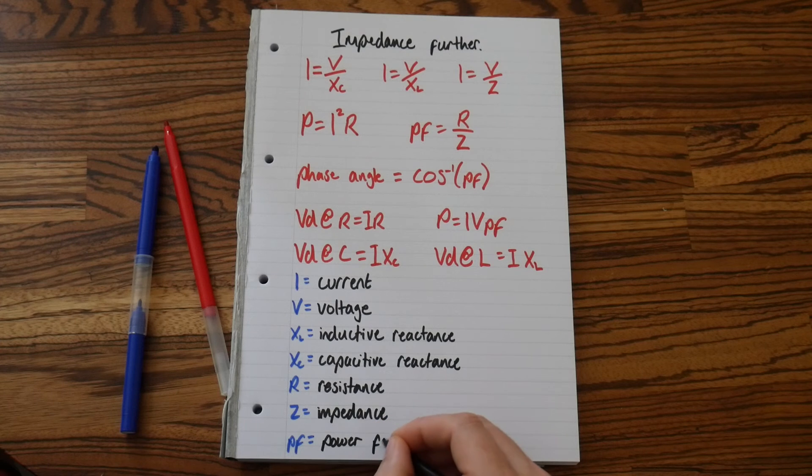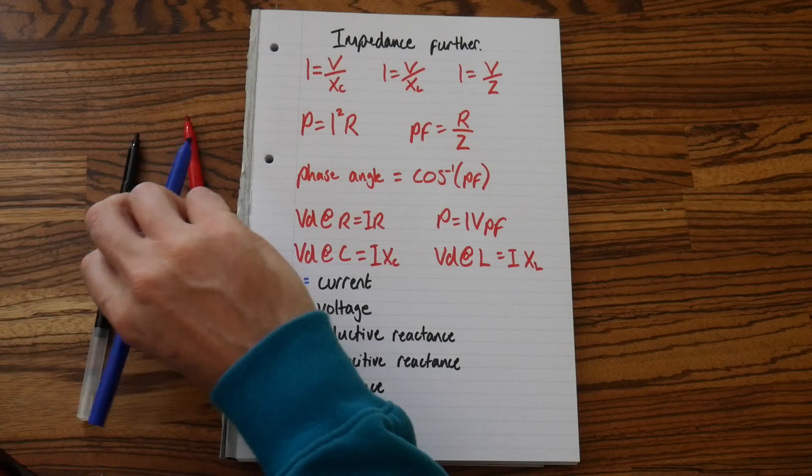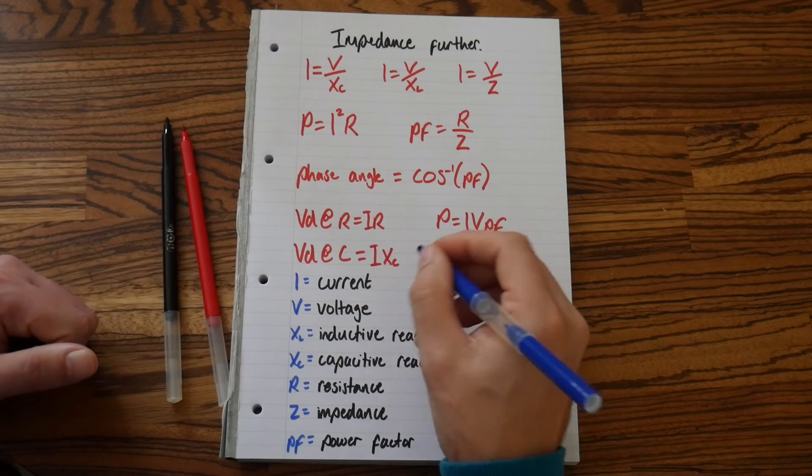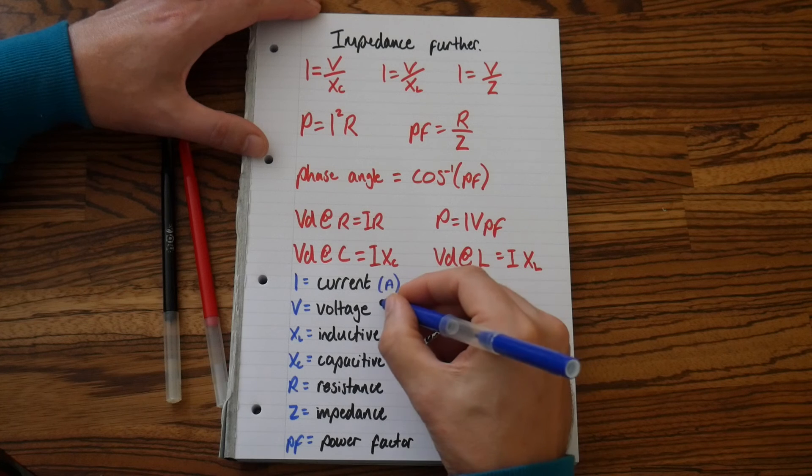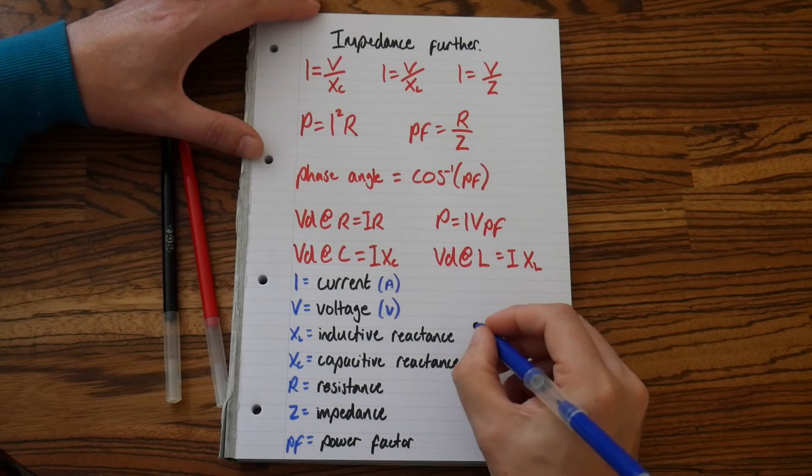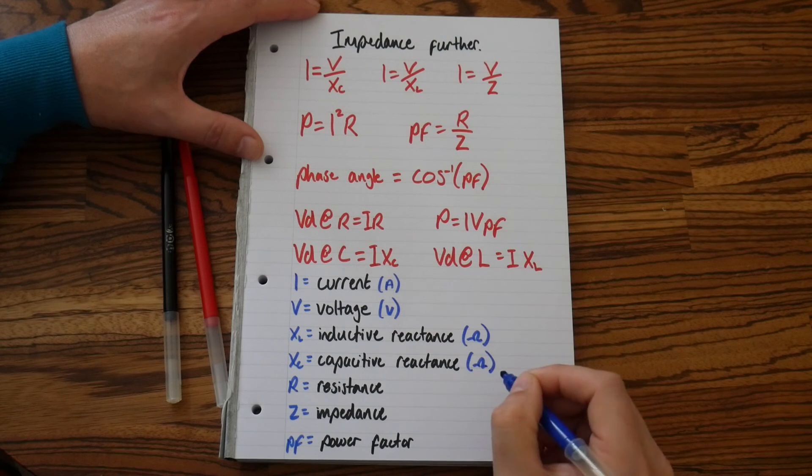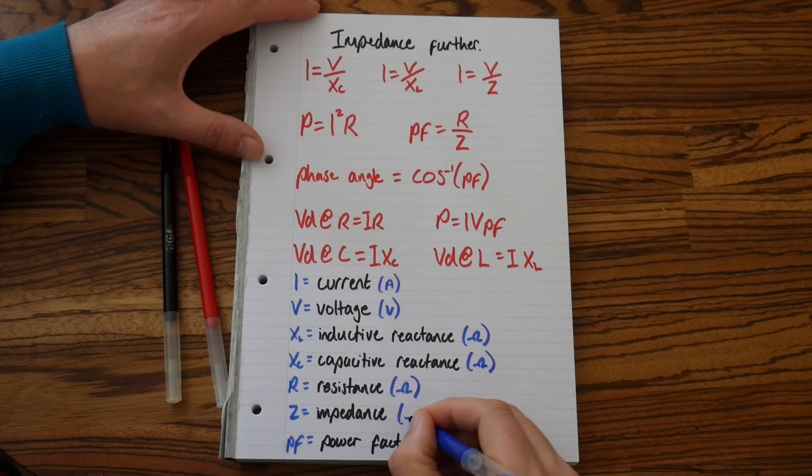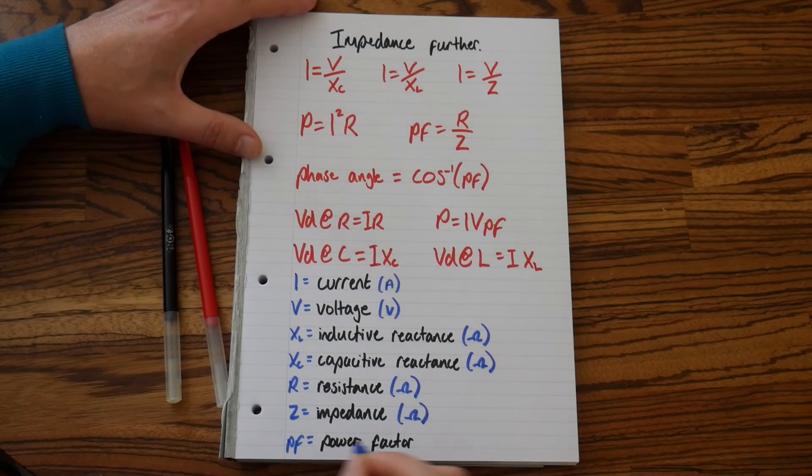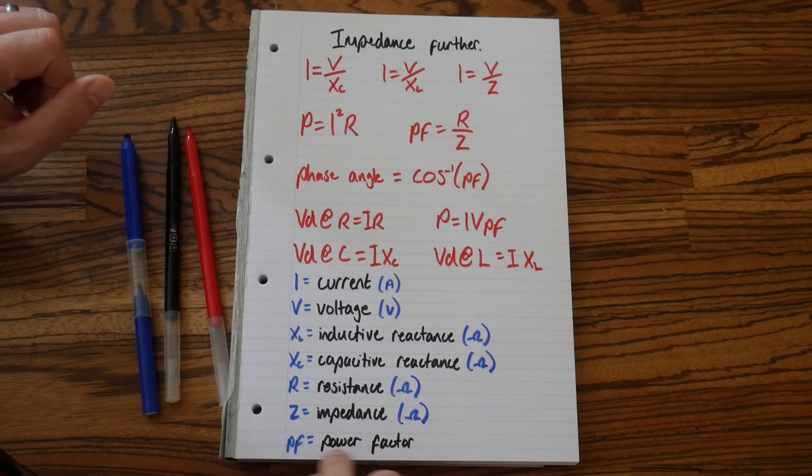Now let's do the SI units. Current is measured in amps, voltage in volts, reactance is measured in ohms, resistance in ohms, impedance in ohms, and the power factor has no SI unit, but be aware this power factor value is always less than one.